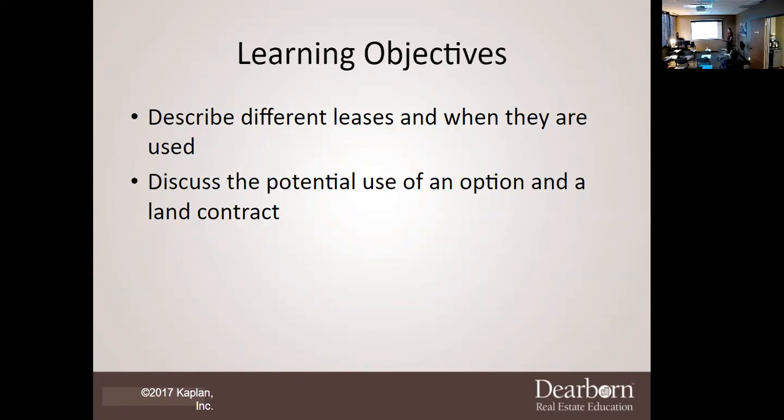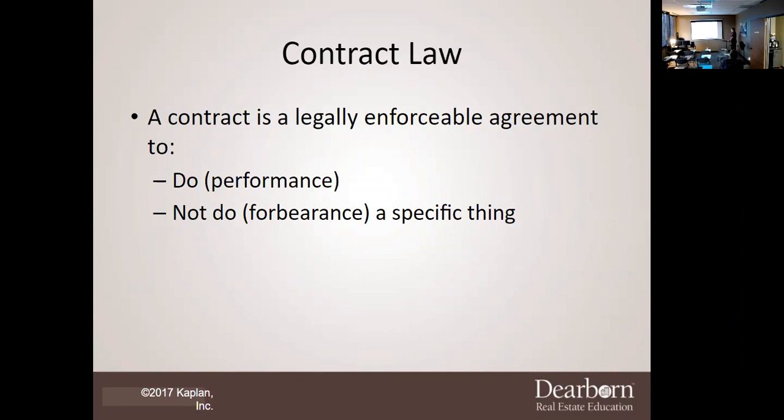We're also going to list reasons for termination of a contract and describe the types of contracts used in real estate, the different types of listings and how they may be terminated, identify information needed for a listing agreement, and compare a listing agreement and a buyer agency agreement. These are some of the objectives we'll be covering this evening — there are a lot of them, so please bear with me.